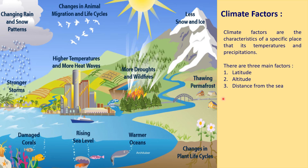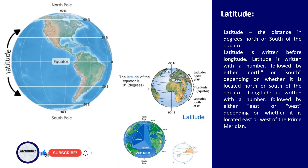Now discussing about the climatic factors — the basic ones are latitude, altitude and distance from the sea. Latitude is the distance in degrees north or south of the equator, which always has zero degrees. Latitude is written with a number followed by either north or south depending on whether it is located north or south of the equator. For example, if it is 60S, that means it is on the south pole side at 60 degrees.